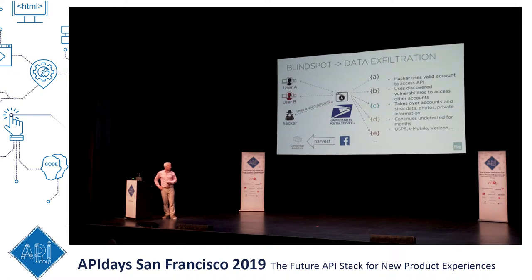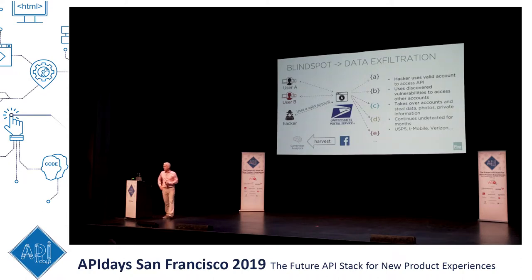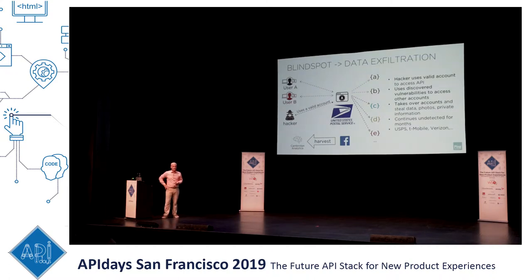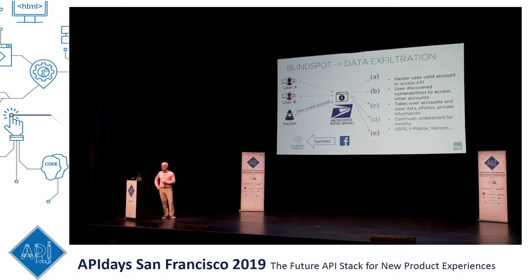Cambridge Analytica — where they were harvesting a lot of data — is a data exfiltration example. They weren't necessarily breaking any rules, but they were doing something that should have been spotted by somebody. That's another form of what we call data exfiltration.